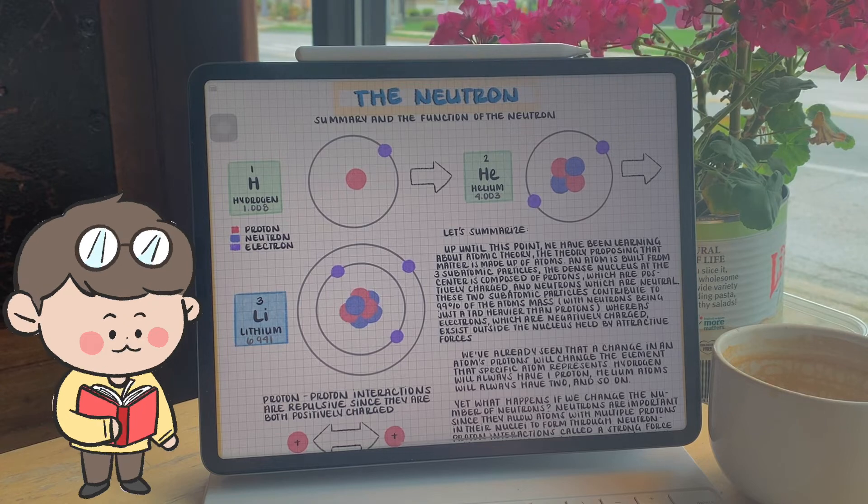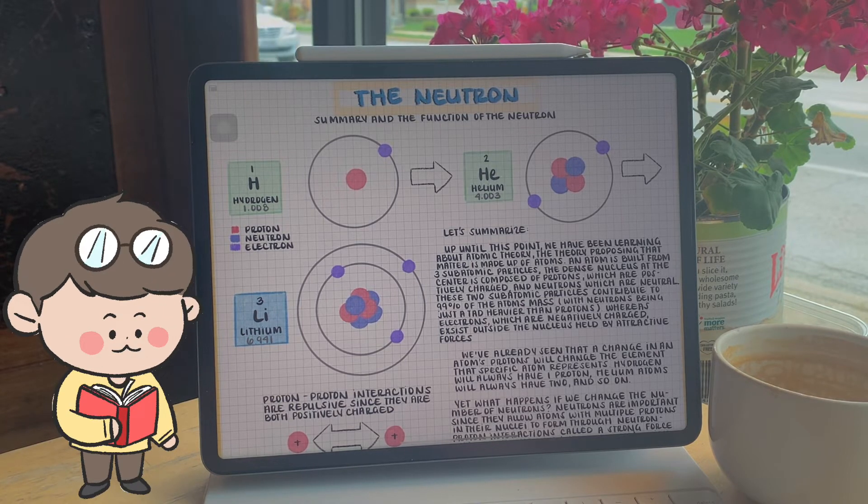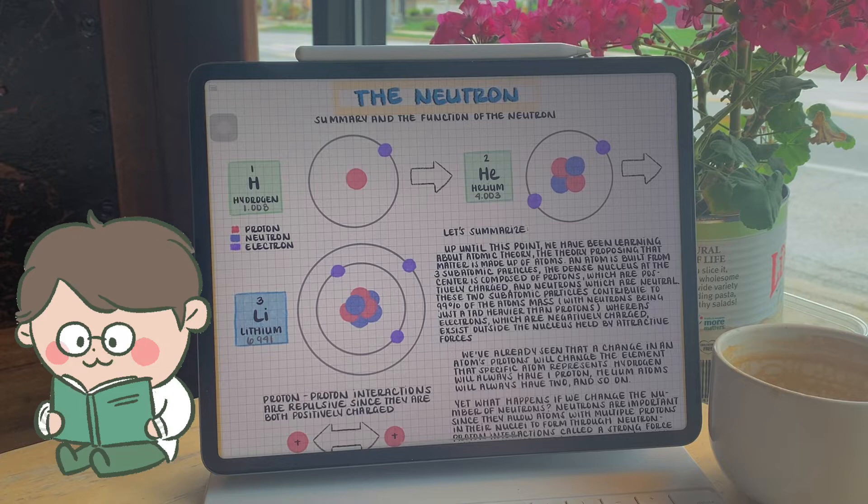And atoms with the same amount of protons, but with a ranging number of neutrons, are called isotopes.